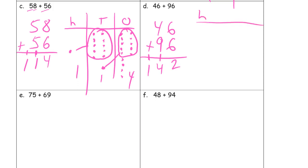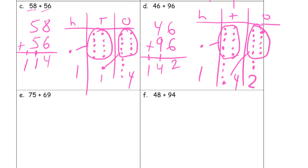Here's our HTO chart. 46 is 4 tens and 6 ones. And then we're 96, that's 9 tens and 6 ones. 10 ones makes a 10. 10 tens makes 100. There's our 100, there's our 100, our 4 tens, and our 2 ones.